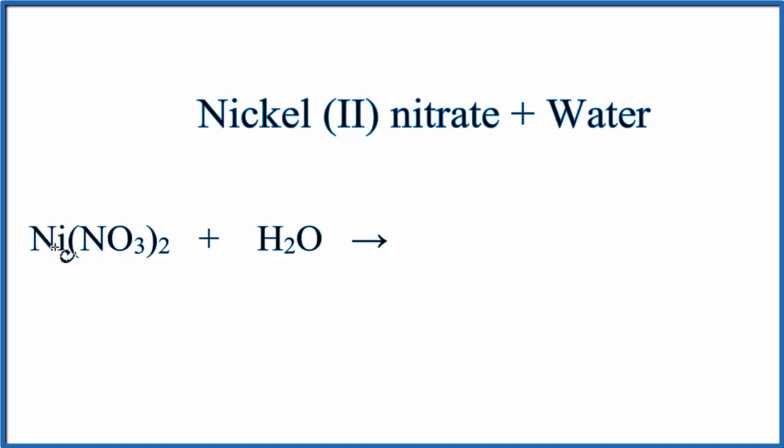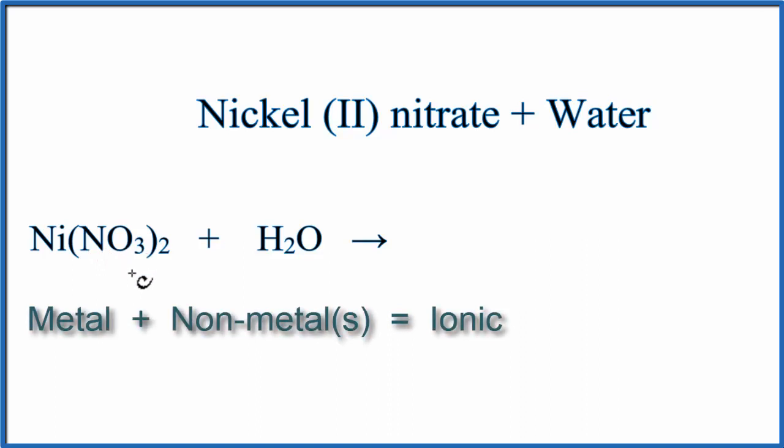Nickel is a metal, it's a transition metal, and then the N and O are non-metals. So when we have a metal and a group of non-metals, or a metal and a non-metal, we have an ionic compound.